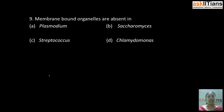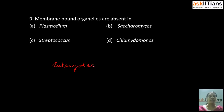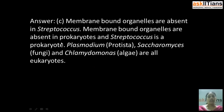Our next question is: membrane-bound organelles are absent in — A) Plasmodium, B) Saccharomyces, C) Streptococcus, D) Chlamydomonas. The correct answer is C: Streptococcus. Membrane-bound organelles are absent in Streptococcus; membrane-bound organelles are a characteristic feature of eukaryotes. Among these options, Plasmodium belongs to Protista, Saccharomyces belongs to Fungi, and Chlamydomonas belongs to algae — all of which are eukaryotes.